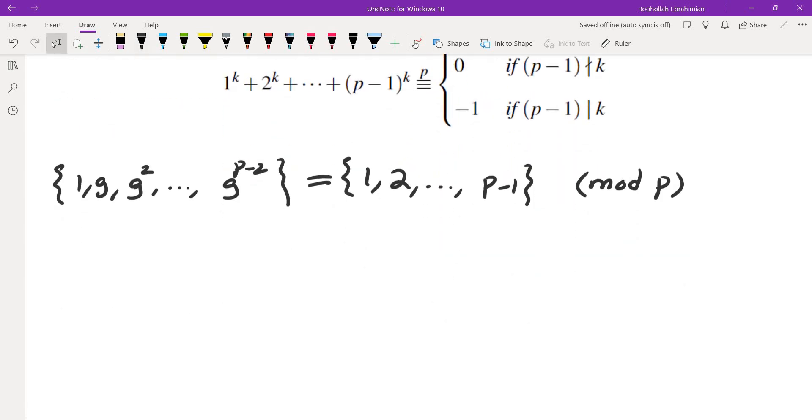So what does that mean? It means there's an element inside Z_p, an integer mod p, whose order is p-1. If you're not comfortable or familiar with the idea of order, I have a video on order which I'll put the link in the description and on the upper right corner of this screen as well.